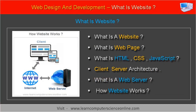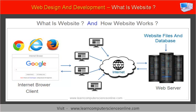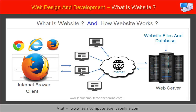Let us now understand how a website works. In order to understand how a website works, we need to first understand terms such as web browser, web server, and the client-server architecture. A web browser is a special program designed to provide access to the various web resources on the internet. Some of the popular and commonly used internet browser programs include Google Chrome, Microsoft Internet Explorer, and Mozilla Firefox.